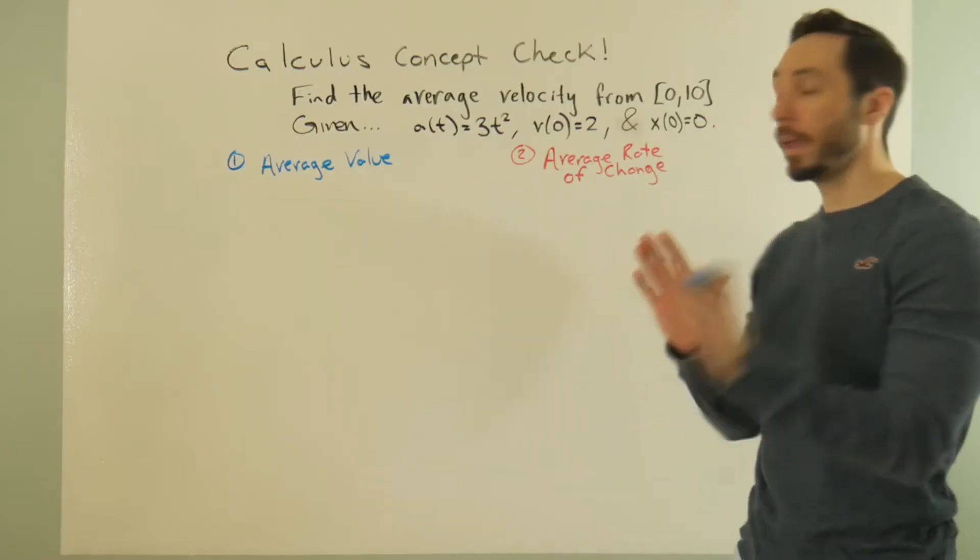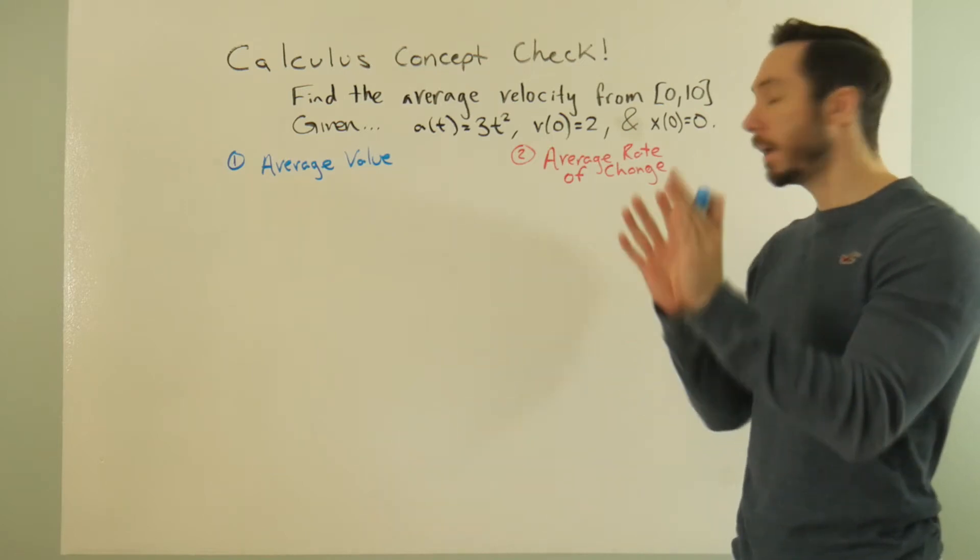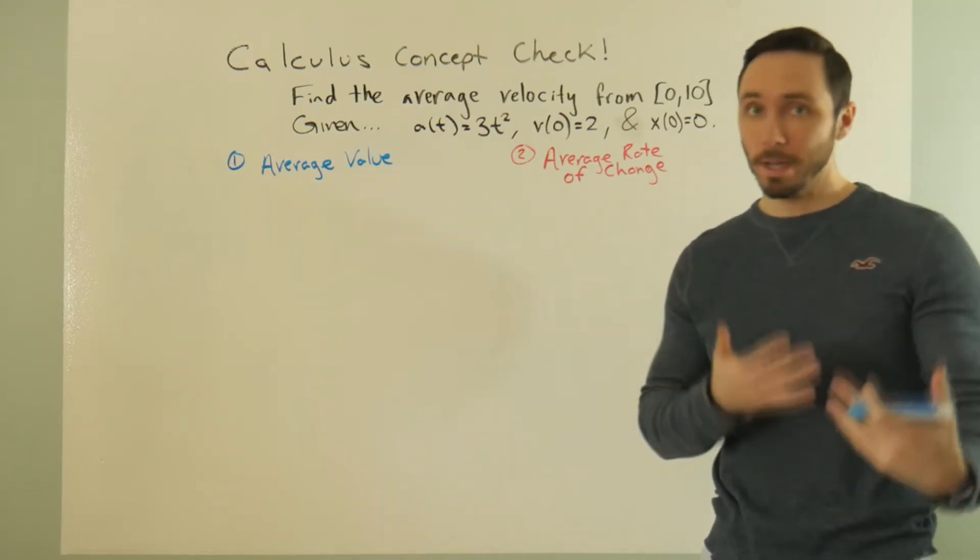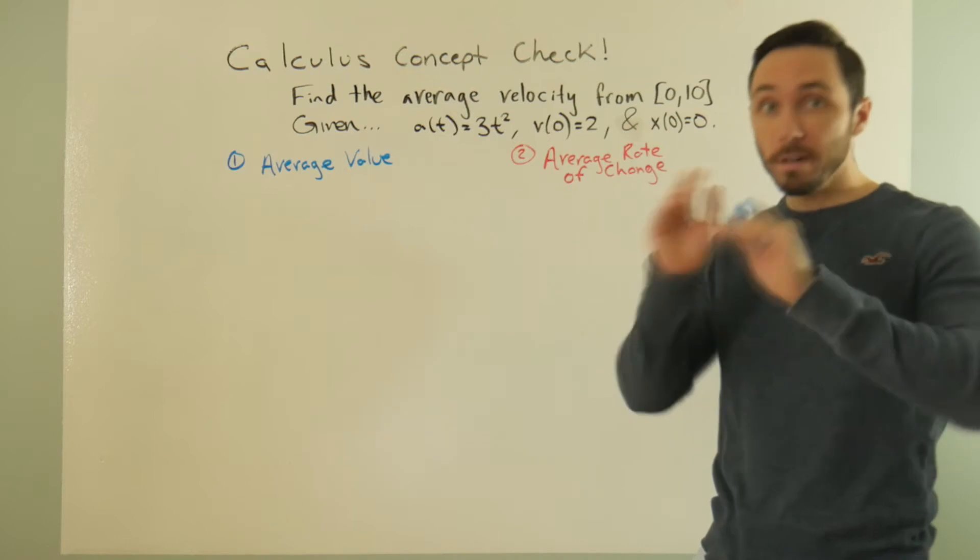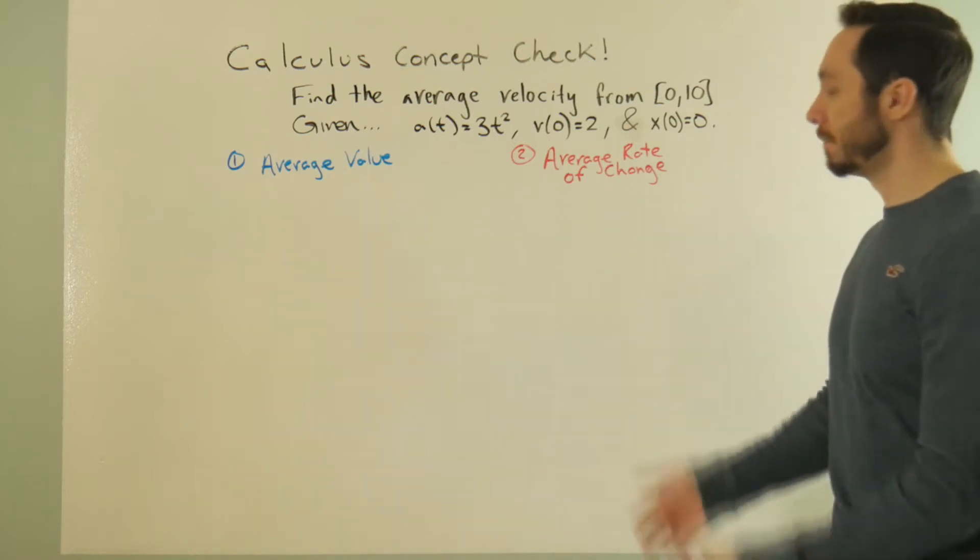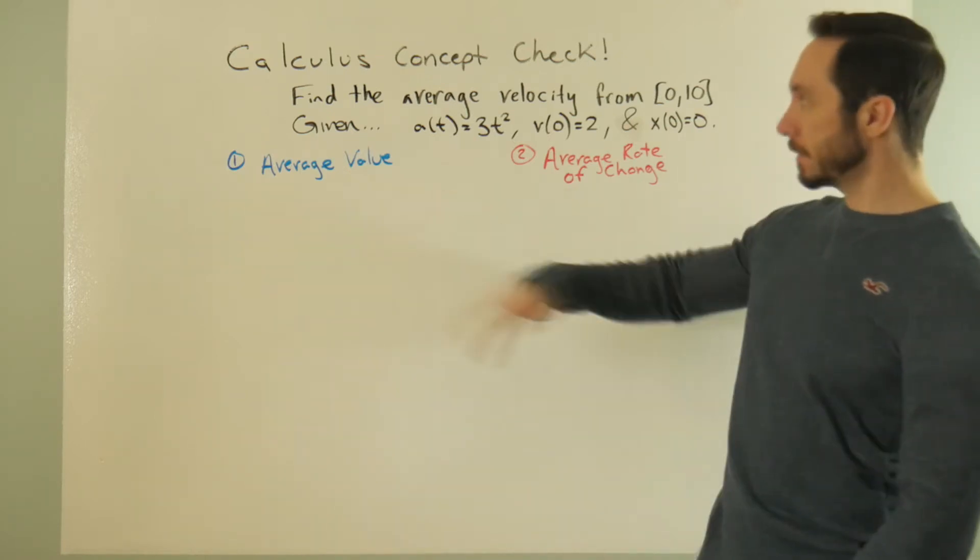Hey, math people. So, average value and average rate of change. Two calculus topics, two different formulas, two different ideas. I guess I can write down the formulas, but let's look at the scenario first.